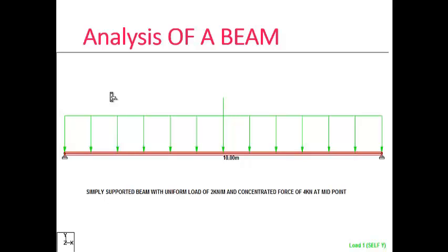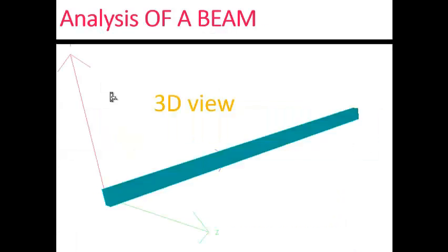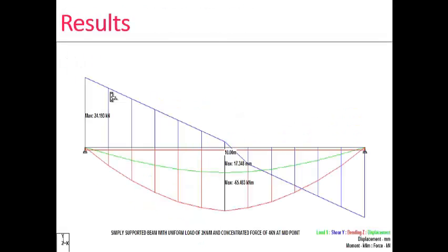Analysis of a beam. Now we analyze a simple beam using STAAD. It is a simply supported beam with a uniform load of 2 kN per meter and a concentric force of 4 kN at the midpoint. This is the 3D view of the beam. These are the analysis results of the beam. The blue line indicates the shear force diagram, the green line indicates the deflection diagram, and the red line indicates the bending moment diagram.